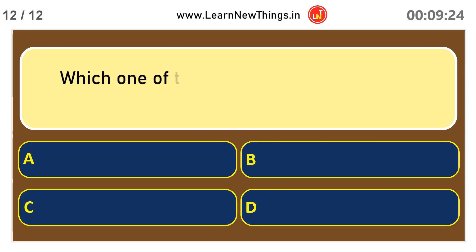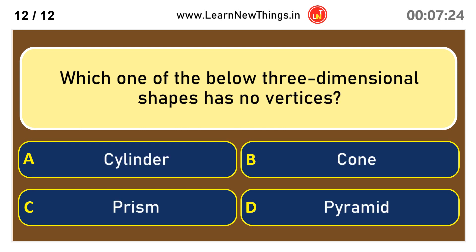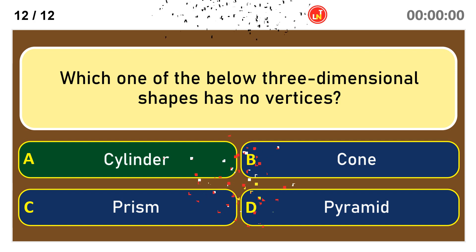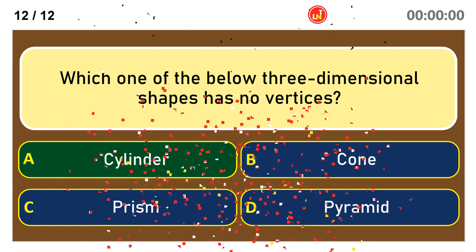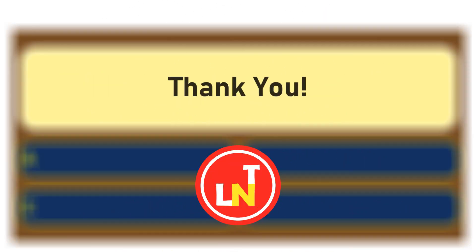Which one of the below 3-dimensional shapes has no vertices? Cylinder.